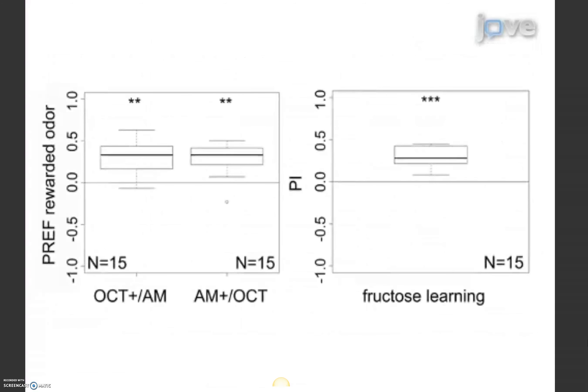An examination of the calculated analysis in box plot revealed that the animals were able to learn to distinguish 1-octanol from amyl acetate using fructose agarose as an appetitive reinforcer.